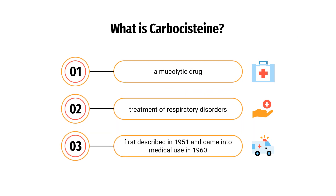What is carbocysteine? Carbocysteine is a mucolytic that reduces the viscosity of sputum and so can be used to help relieve the symptoms of chronic obstructive pulmonary disorder and bronchiectasis by allowing the sufferer to bring up sputum more easily. It was first described in 1951 and came into medical use in 1960. Carbocysteine is produced by alkylation of cysteine with chloroacetic acid.